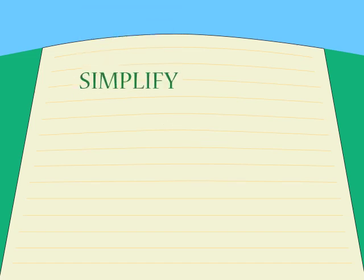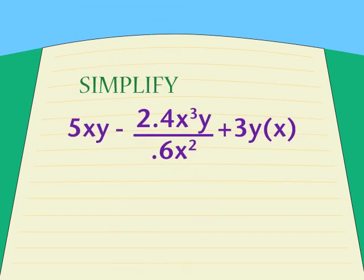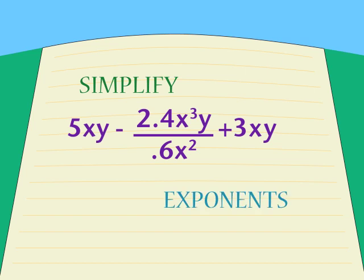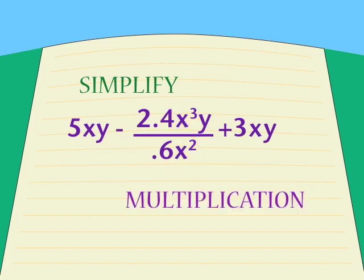Now, back to that complicated problem we saw before — looks scary, doesn't it? But we're going to do it using our recipe. What comes first? Brackets. I see 3y times x at the end; I could write it 3yx, but I make it 3xy to match the 5xy at the beginning. What's next? Exponents — we have an x cubed and an x squared, but we can't simplify either of them yet. Next, multiplication — there still isn't anything to simplify.